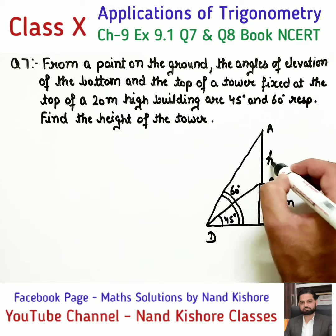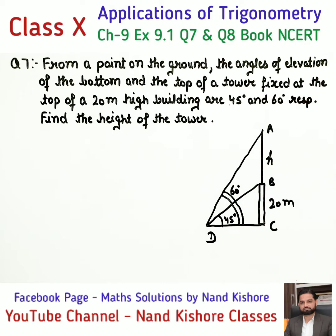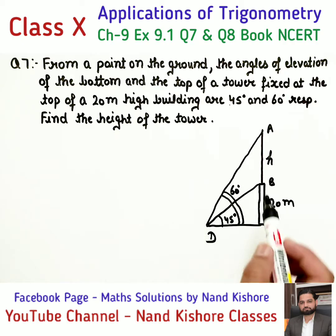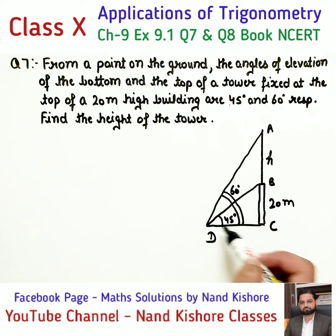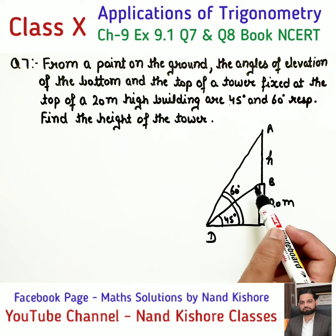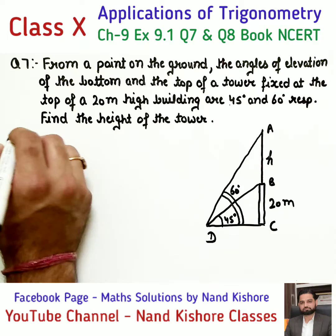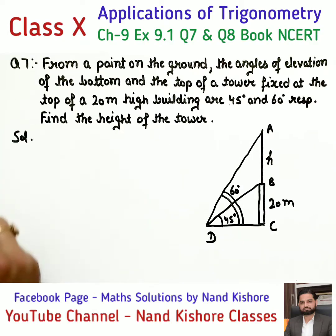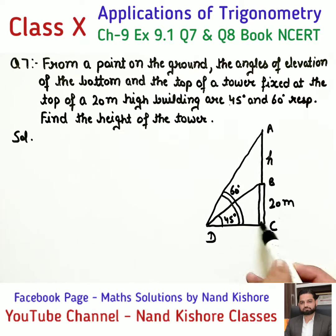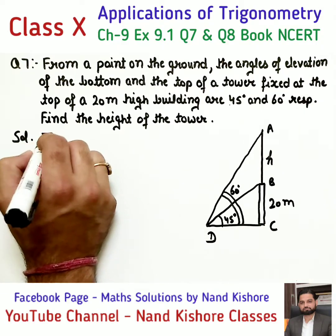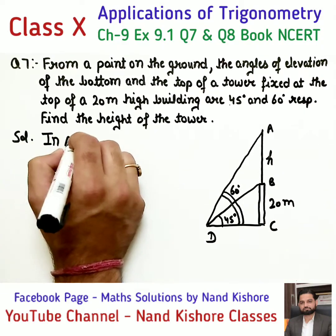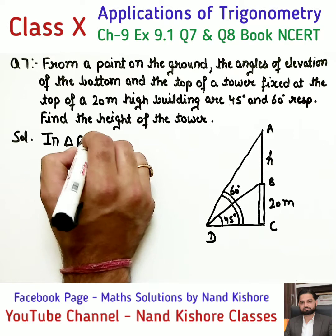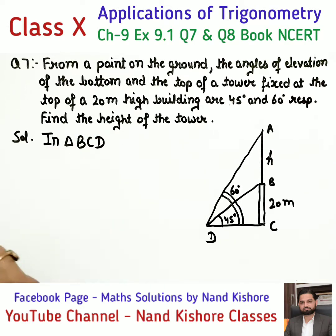Let the height of tower AB be H. I had told you that however many right angle triangles are formed, you have to go into each one. Let's start with the smaller triangle BCD.